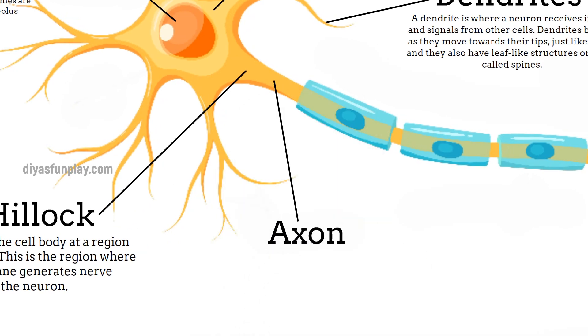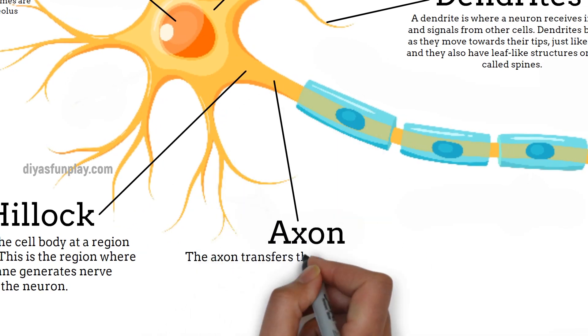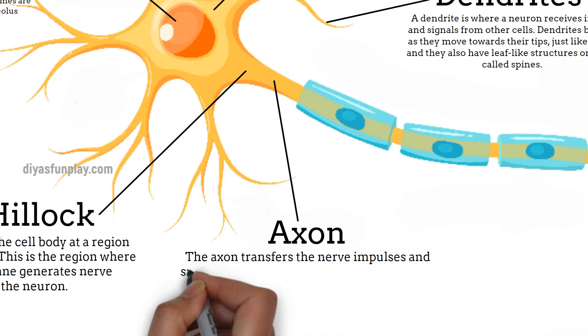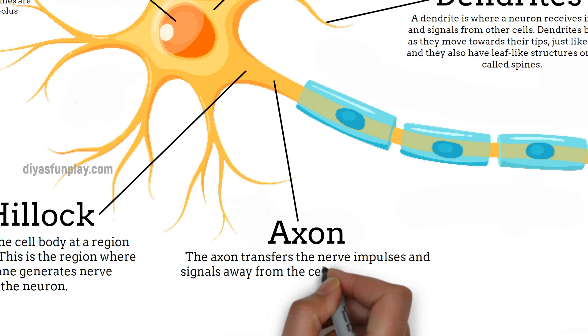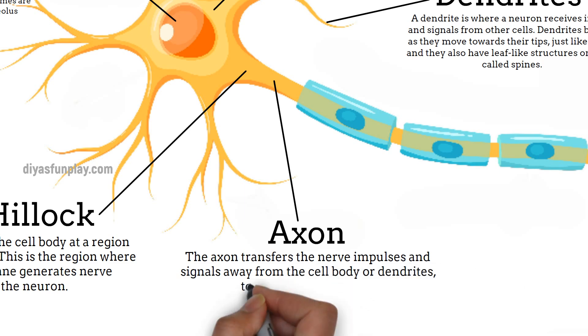The axon transfers the nerve impulses and signals away from the cell body or dendrites, towards other neurons.